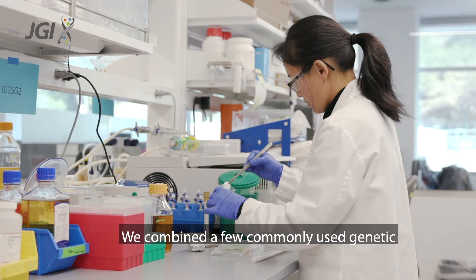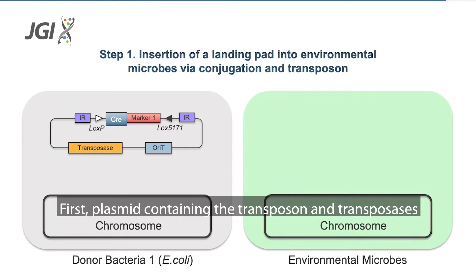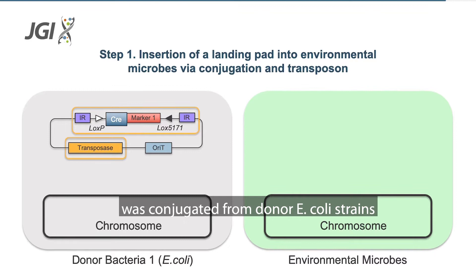We combined a few commonly used genetic engineering tools and developed CREG. CREG technology involves two conjugation steps. First, a plasmid containing the transposon and transposase was conjugated from donor E. coli strains into various recipient bacterial strains.